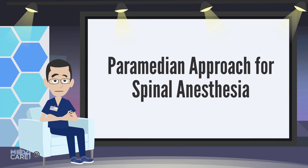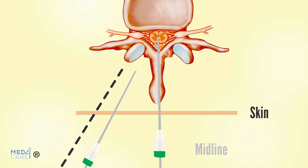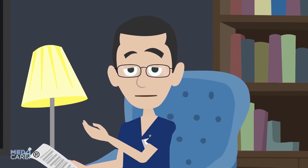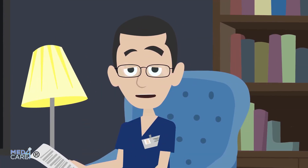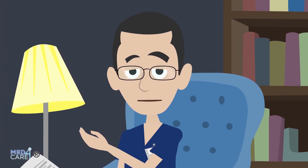Paramedian approach for spinal anesthesia: for the paramedian approach, the cutaneous knob of local anesthetic is positioned about 2 cm from the midline, and the spinal needle advances at an angle towards the midline. In this approach, you usually do not encounter the supraspinous and interspinous ligaments.